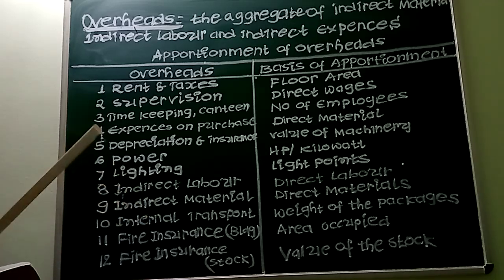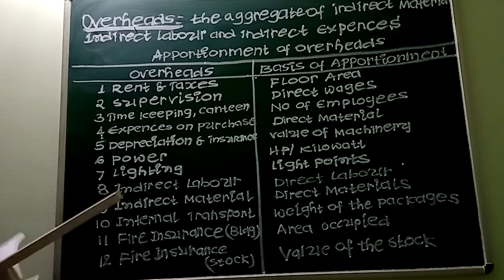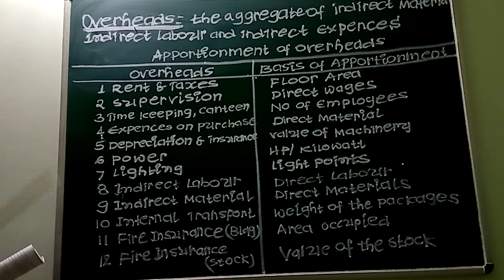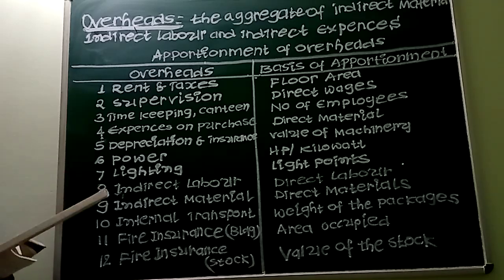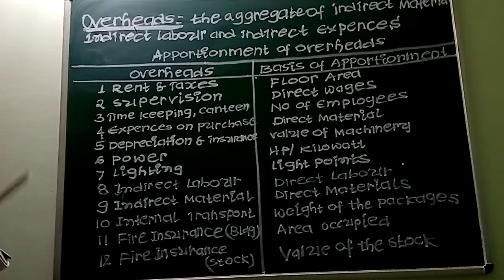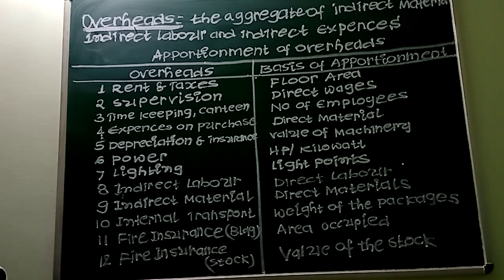Overheads are also classified on the basis of functions. Production overheads are those overheads incurred for the purpose of converting raw material into finished products. The second classification under functions is office and administration overheads, which refers to all expenses relating to office administration and management.